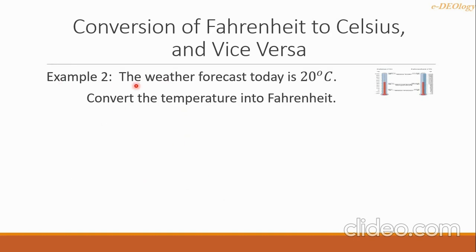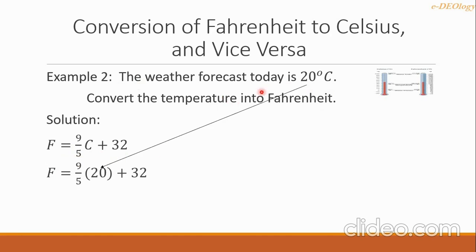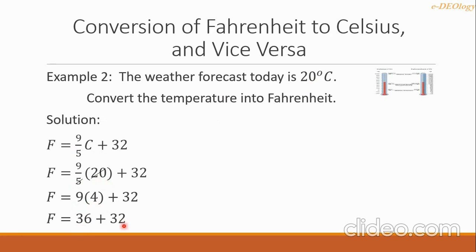Example two: the weather forecast today is 20 degrees Celsius — convert the temperature into Fahrenheit. Our formula is F equals 9 over 5 times C, plus 32. We substitute 20 for C. We cancel 20 and 5: 5 becomes 1 and 20 becomes 4. Then 9 times 4 equals 36, plus 32 equals 68. The final answer is 68 degrees Fahrenheit, so 20 degrees Celsius equals 68 degrees Fahrenheit.